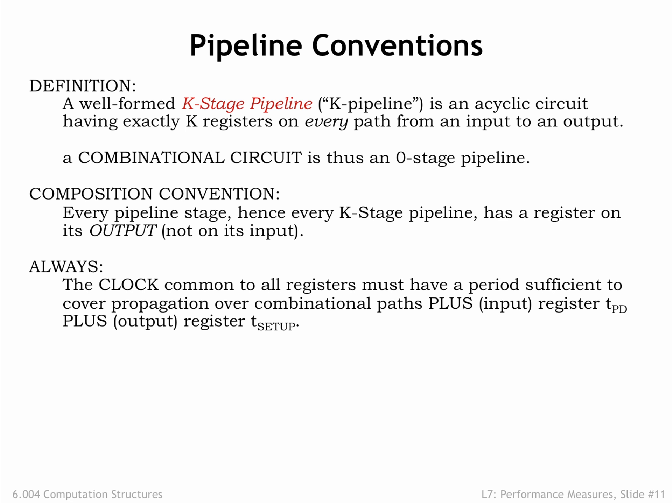So for every register-to-register and input-to-register path, we need to compute the sum of the propagation delay of the input register plus the propagation delay of the combinational logic plus the setup time of the output register. Then we'll choose the system's clock period to be greater than or equal to the largest such sum. With the correct clock period and exactly K registers along each path from system input to system output, we are guaranteed that the K-pipeline will compute the same outputs as the original unpipelined combinational circuit.